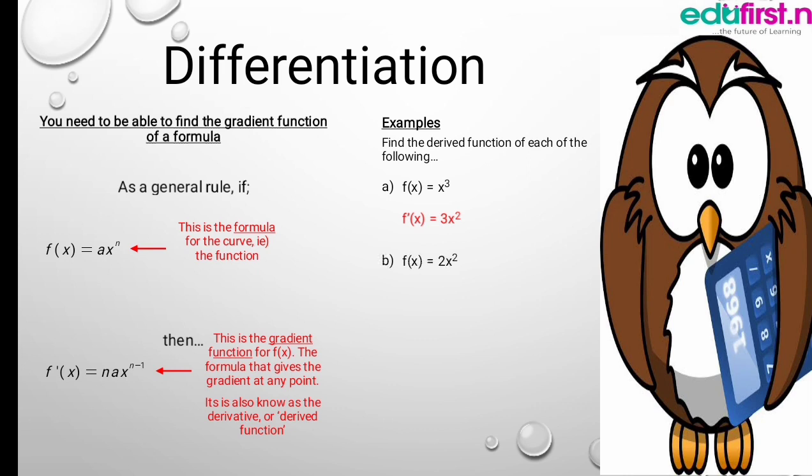Here we have f(x) equals 2x to the power 2, and the derivative is 4x to the power 1, which is the same as 4x. For f(x) equals x to the power minus 2, this will be different: we have minus 2 times x, giving us minus 2x. Then the power will be plus 1 because our power is negative. So minus 2 plus 1 gives us minus 3. That is why we have minus 2x to the power of minus 3.